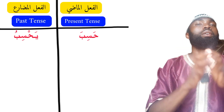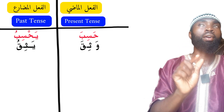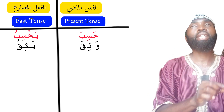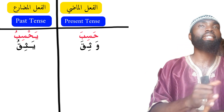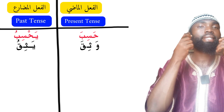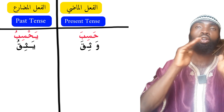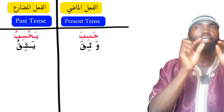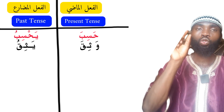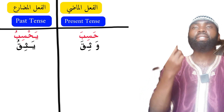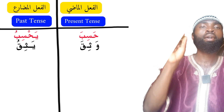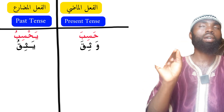The first of the 13 verbs under this category is wafiqa-yafiqu. This verb begins with wa, and wa is a harf 'illa — one of the three weak letters in Arabic: the alif, the wa, and the ya. These are called huruf 'illa, the weak or sick letters, which we shall discuss extensively in coming episodes. When a sick letter begins a verb, it is omitted in the present tense and replaced by the present tense marker ya. So we get yafiqu. Wafiqa-yafiqu means to trust or rely on someone.